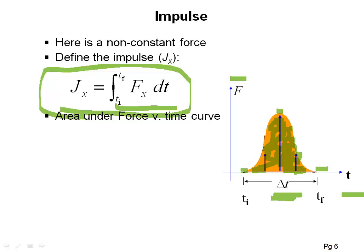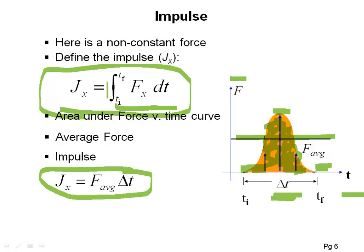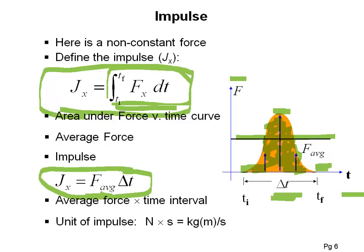We're not going to do too much with integrals beyond that. Another way to think about this is the average force. The force starts at zero, ends at zero, and has some peak in the middle. We can define an average force such that the impulse J_x is the same as the complicated integral. Since this average force is constant, we deal with it as: impulse equals the average force times the time interval. The units of impulse are force times time, or newton-seconds, which works out to kilogram meters per second — the same units as momentum.